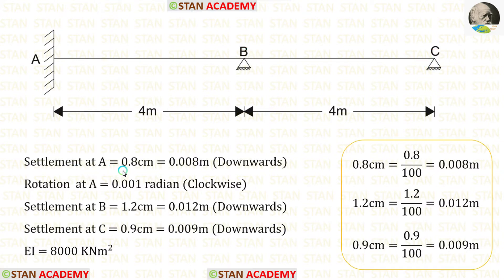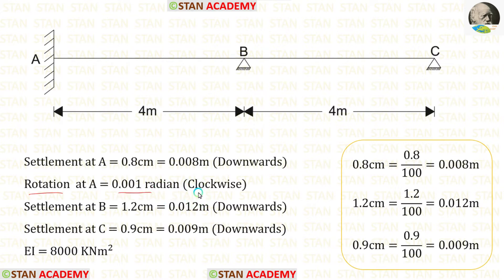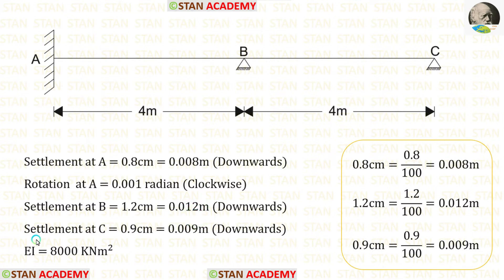Support A settles by 0.8 centimeters, which converts to 0.008 meters. Also, at support A there is a rotation of 0.001 radians in the clockwise direction. Support B settles by 1.2 centimeters, converting to 0.012 meters. Support C settles by 0.9 centimeters, converting to 0.009 meters.